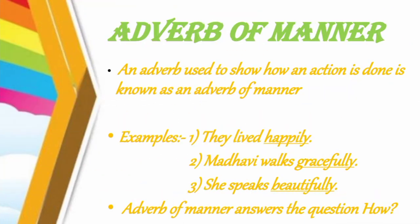First, we have adverb of manner. An adverb used to show how an action is done is known as an adverb of manner. Examples: 'They lived happily' — happily is the adverb modifying the verb 'lived'. 'Madhvi walks gracefully' — gracefully describes the verb 'walks'. 'She speaks beautifully' — beautifully describes 'speaks'. Adverb of manner answers the question 'how', like 'how did they live?'